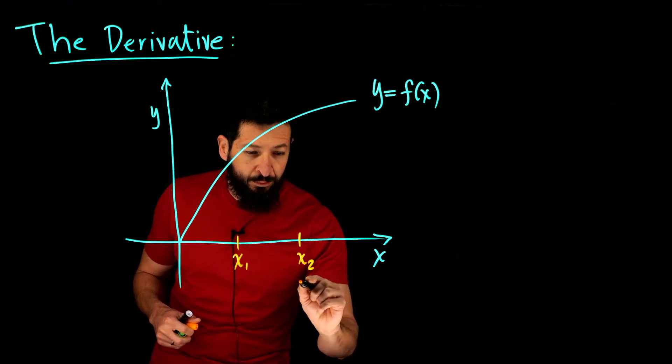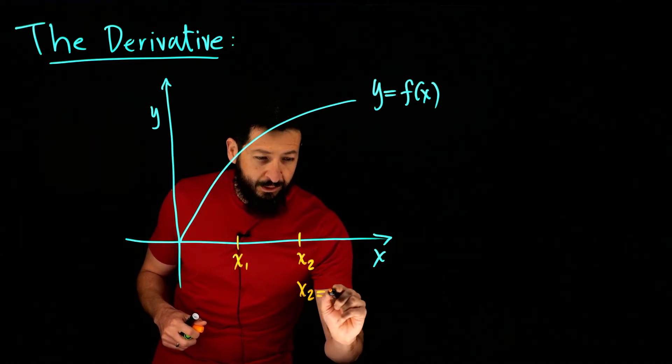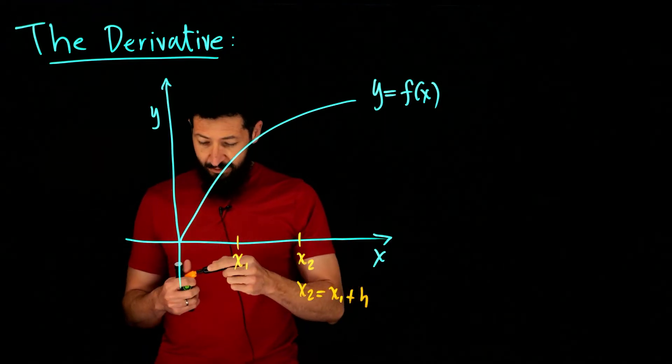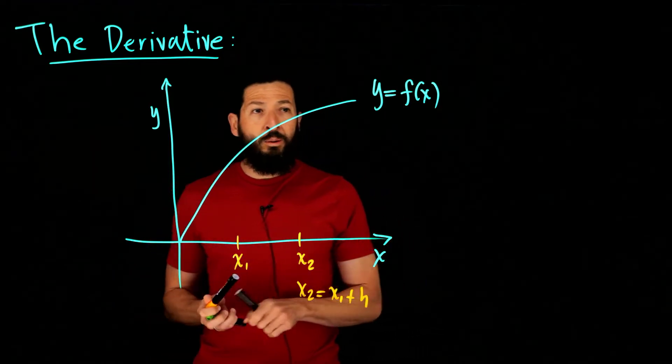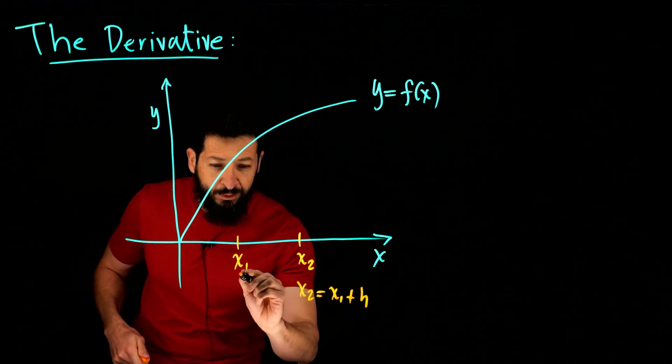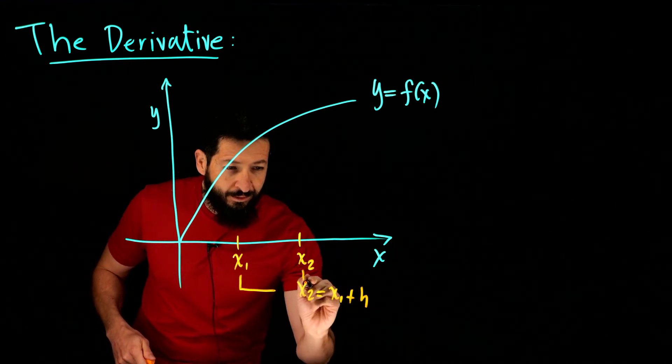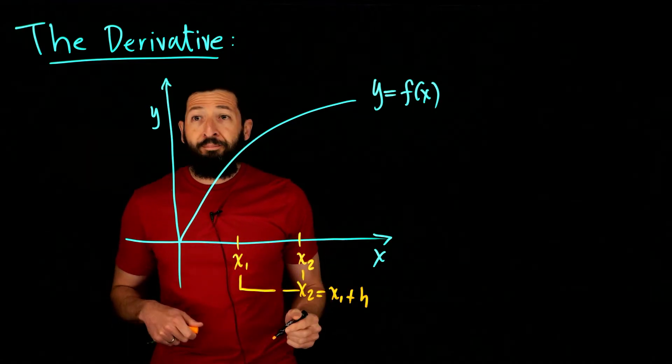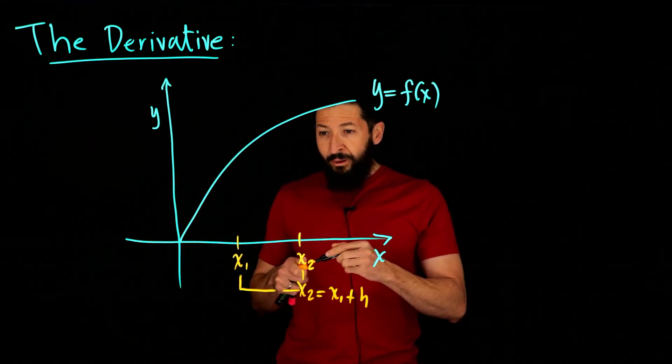What would that quantity h represent? It would be just the distance between these two points. So the distance there would be your h, right?